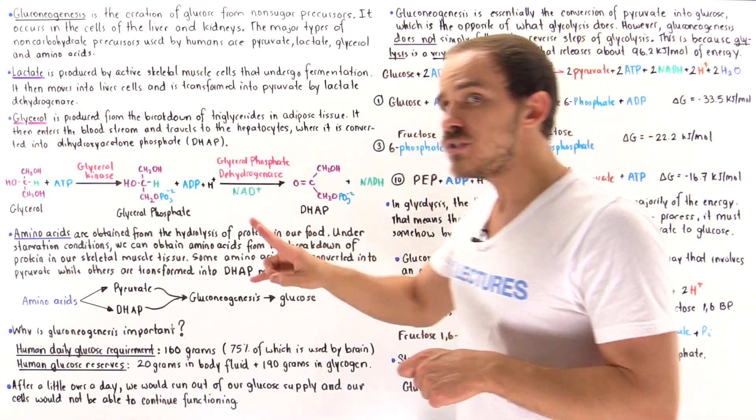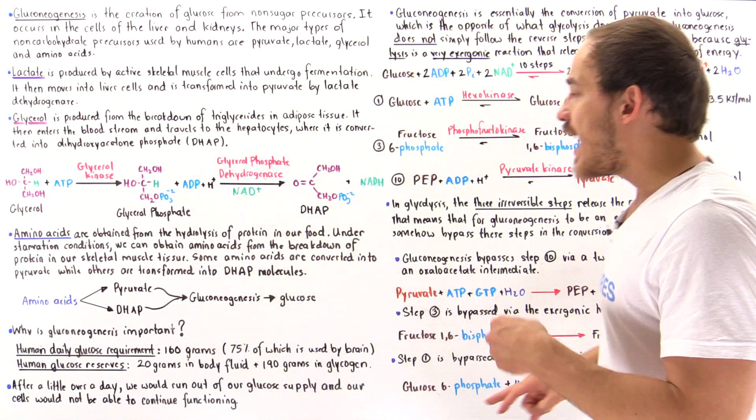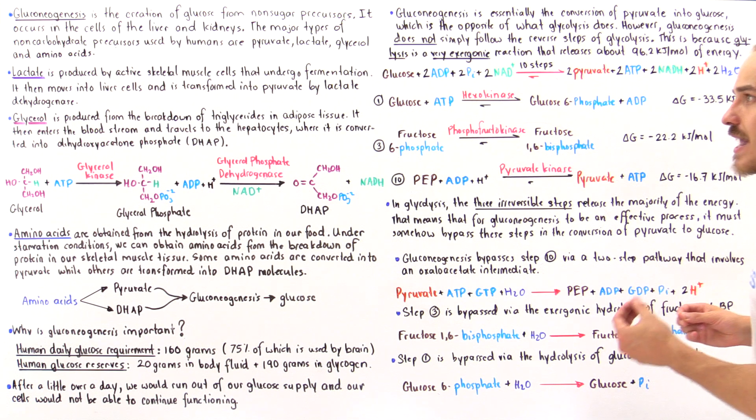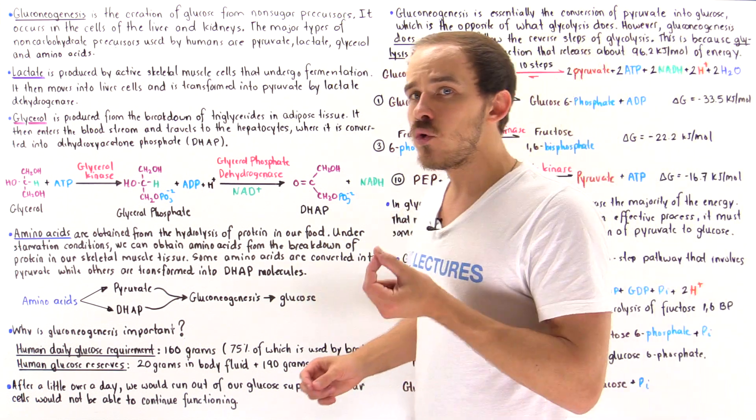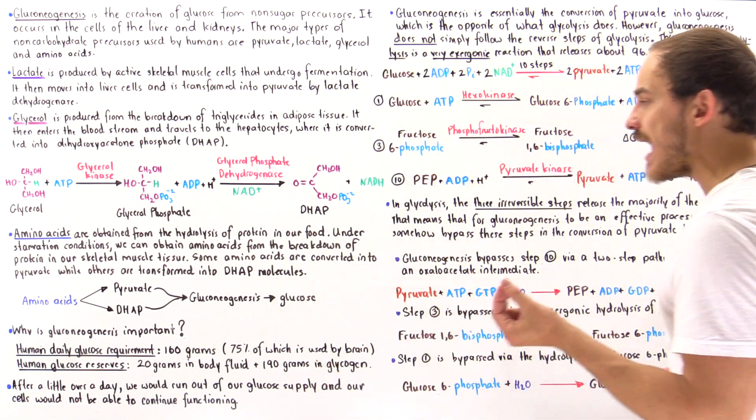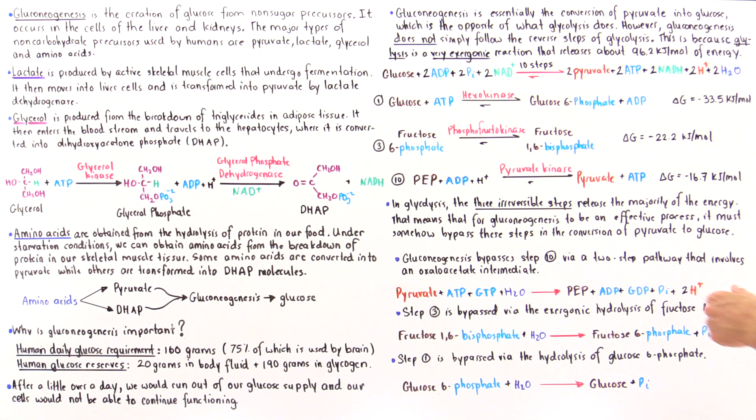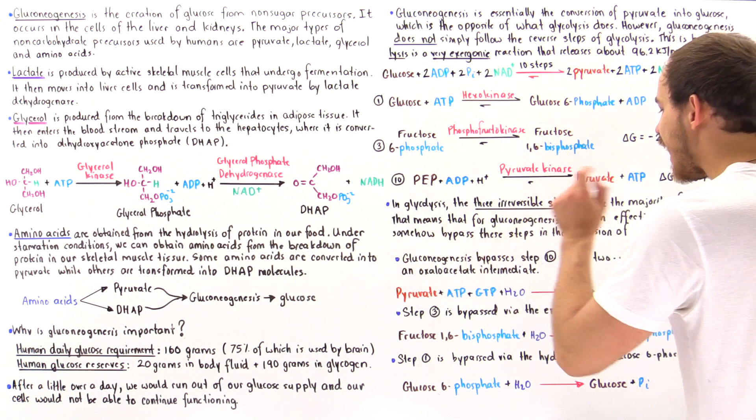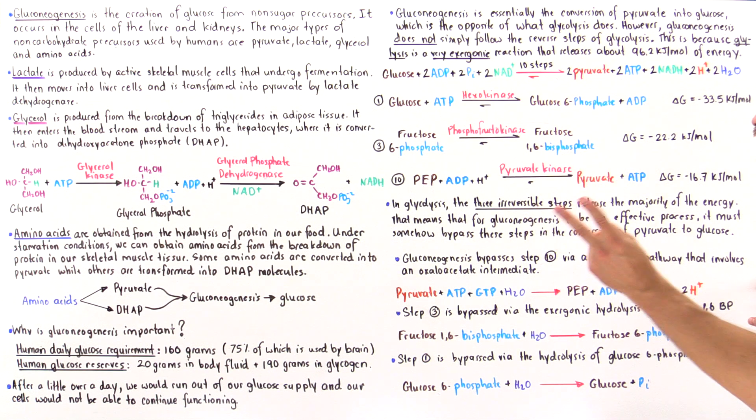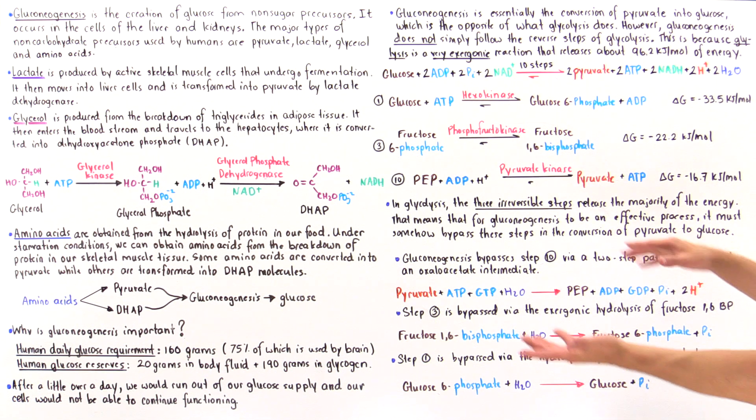In fact, a two-step process is followed, and in this two-step process an important intermediate known as the oxaloacetate molecule is used. So gluconeogenesis bypasses step 10 via a two-step reaction pathway that involves the oxaloacetate intermediate, and if we sum up those two steps...